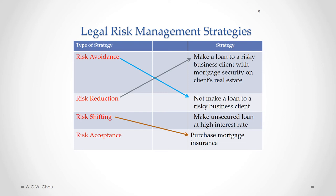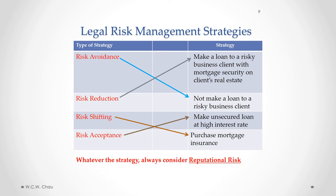The fourth type of legal risk management strategy is risk acceptance, where the business has identified the legal risk and decided to simply accept that risk. In our example, the bank would go ahead and make the loan without any security, but could ask for a high rate of interest as compensation for taking on that high risk. Always keep in mind that reputational risk should be considered when formulating any of these strategies.